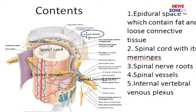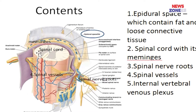The contents of the vertebral canal: first is the epidural space, which lies between the periosteum of the vertebra and the meninges of the spinal cord. This space contains loose connective tissue and fat. There is also the spinal cord, spinal cord nerve roots, spinal nerve and nerve roots, and the spinal vessels and internal vertebral venous plexus.